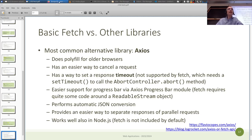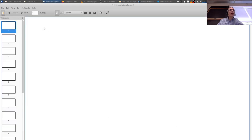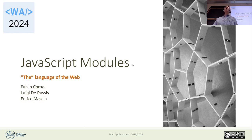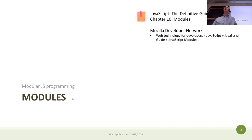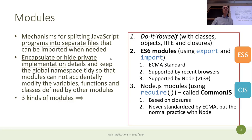Now for the last topic: JavaScript modules. This is quite a technical point — there are not many concepts to understand but we've already used them implicitly. Modules are a way to split a JavaScript program into multiple files. In the beginning of the course we said one file equals one JavaScript program — with modules, multiple files can behave like a single JavaScript program.